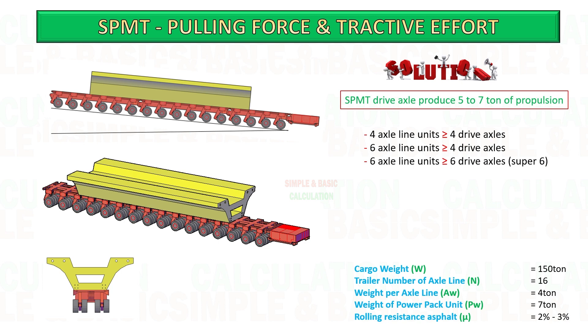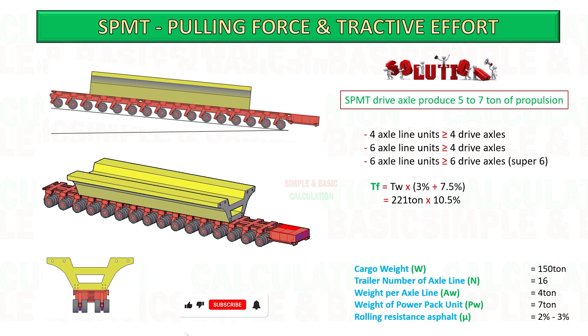Next, calculate the required tractive effort for SPMT by adding the rolling resistance and slope percent and multiplying by the total weight.